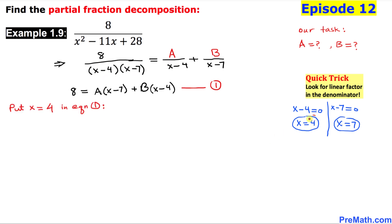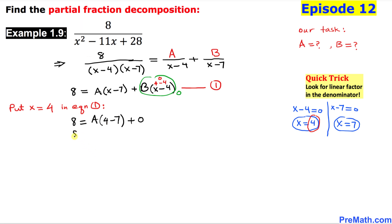Let's focus on x equal to 4. Put x equal to 4 in equation 1 — wherever we see x, replace it by 4. On the left hand side we have 8. On the right hand side: A times 4 minus 7, and then for the B term, 4 minus 4 gives us 0, so 0 times that whole thing is 0. This simplifies to 8 equals negative 3A, which means A equals negative 8 over 3.